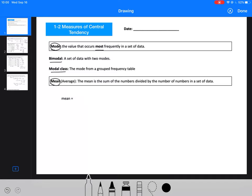The next term is the mean. The mean is the sum of the numbers divided by the number of numbers in a set of data. So we can write that out in words like this: the sum of our data values divided by the number of data values.